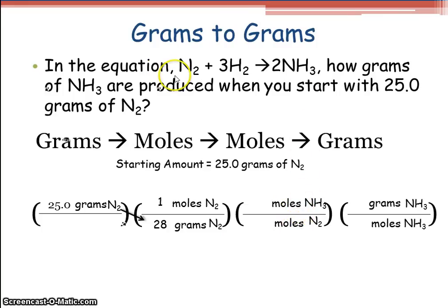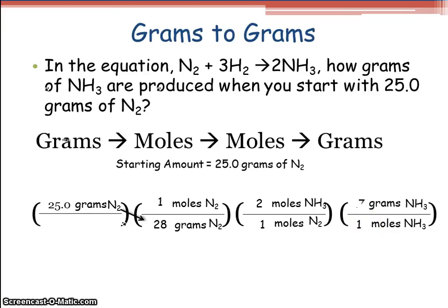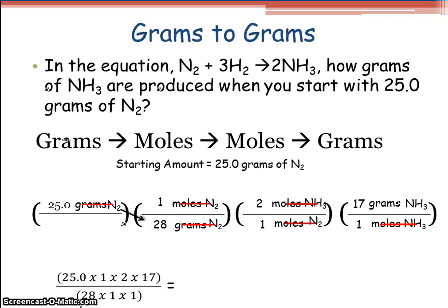When I compare moles to moles, I always look at the chemical equation. Moles of NH₃: there's a 2 in front, so I have 2. For N₂, there's no number in front, so that's 1. When converting moles to grams, we look at the periodic table again: for every one mole of NH₃, I have 17 grams of NH₃ — nitrogen is 14, hydrogen is 1, and we have 3 of them, so 3 plus 14 is 17. Cancel units of grams of N₂ and moles of N₂ and moles of NH₃. Then: 25.0 × 1 × 2 × 17, divided by 28 × 1 × 1, gives us an answer of 30.4 grams of NH₃.